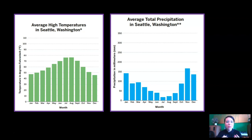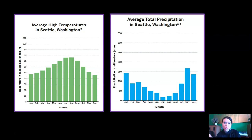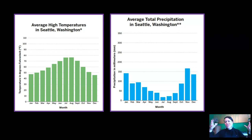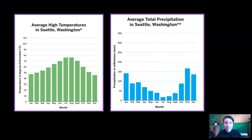Remember that these graphs aren't from a specific year — not from 1989, not from 2001. These are graphs made from average data that scientists created by looking at years and years of data and finding what the average temperature is for each month and precipitation.